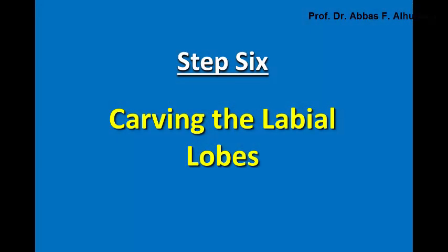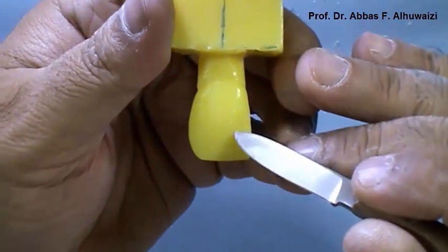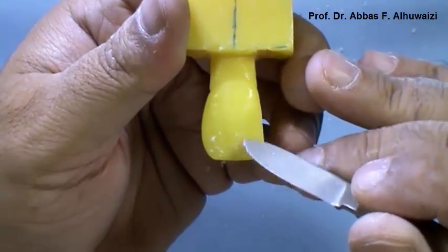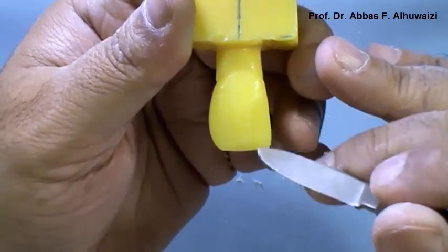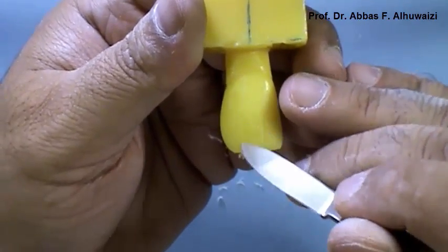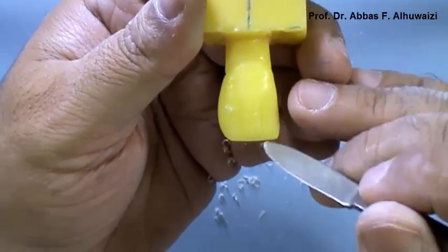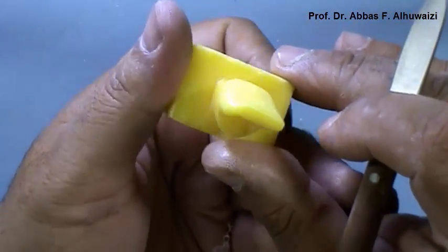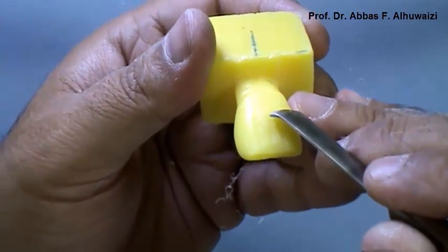Step 6: Carving the labial lobes. The labial surface of a central incisor has three lobes — mesial, middle, and distal. So we carve two depressions that will divide the labial surface of the tooth into three areas, as you can see here. Then we make and broaden the groove by the spoon end of the wax knife.